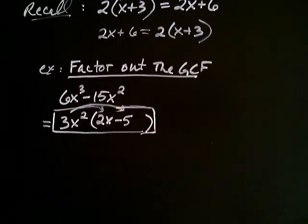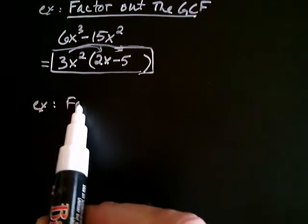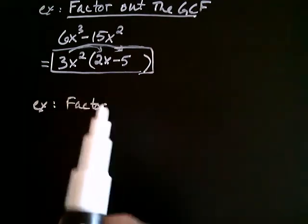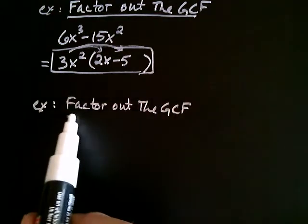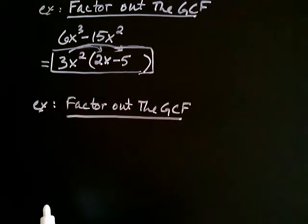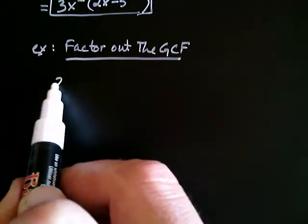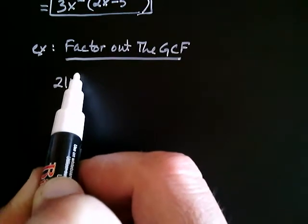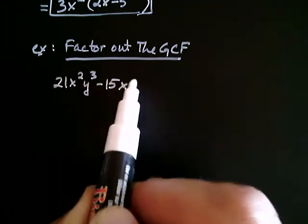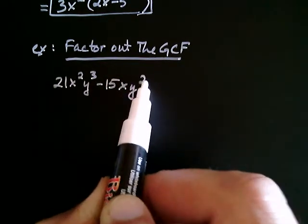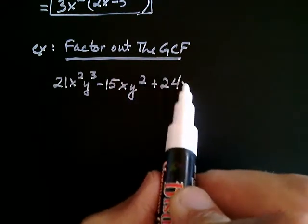Let's try another one like that. Okay, let's factor out the GCF. Let's say that we had something a little longer. Let's say that we had 21x squared y cubed minus 15xy squared plus 24x squared y squared.